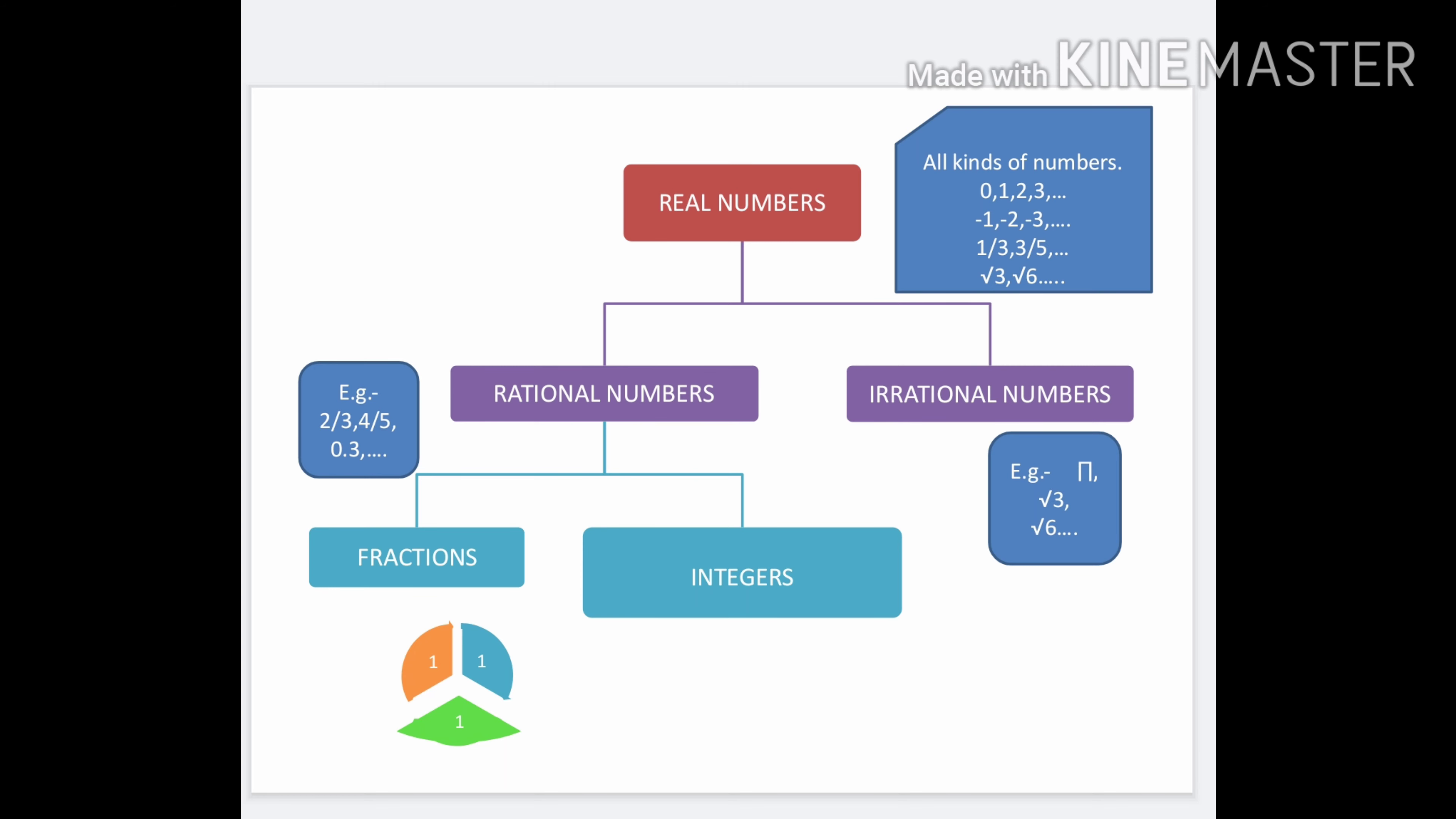Rational numbers are those numbers which can be written in P upon Q form. For example, 2 upon 3, 4 upon 5, etc.